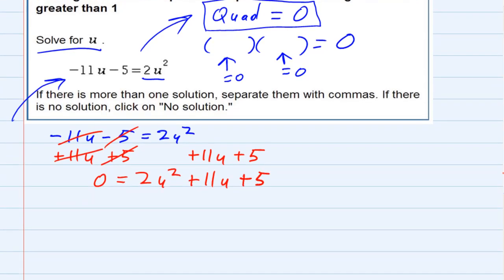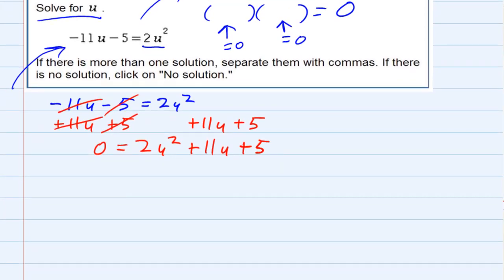And that's going to cancel the minus 5. So I have zero equals 2u squared plus 11u plus 5. So I have zero equals my quadratic, and now I need to factor that quadratic. So on the right-hand side, I know that this is going to factor into two binomials, or at least if I'm going to get a solution, it's going to factor into two binomials.